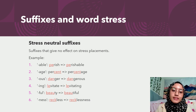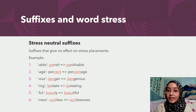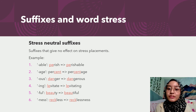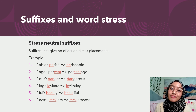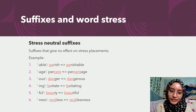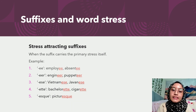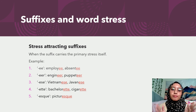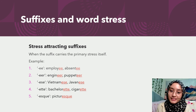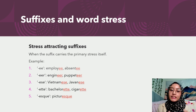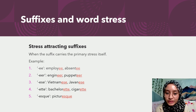Is it possible that a suffix can give no effect on the stress placements at all? Yes, it is possible, and it is called stress-neutral suffixes. For example, the suffix '-able': 'perish' and 'perishable' — no difference. Same goes to the other examples here. Thirdly, the third type is called stress-attracting suffixes, where the primary stress is placed on the suffix itself — like the suffix '-ee' in 'employee', 'absentee', and the suffix '-eer' in 'engineer', 'puppeteer'. And the list goes on.